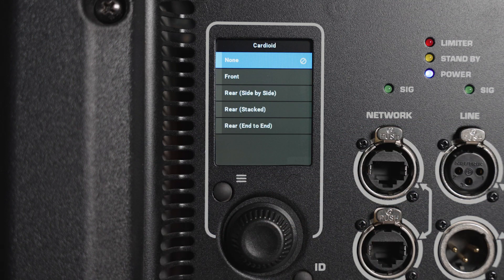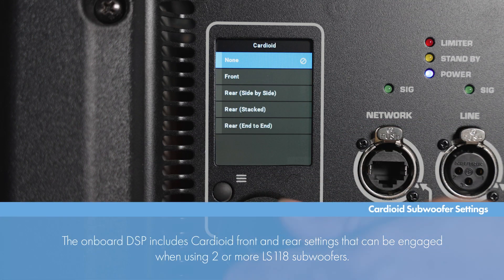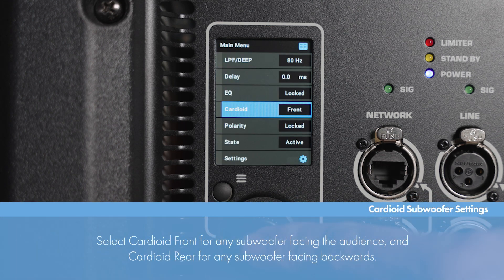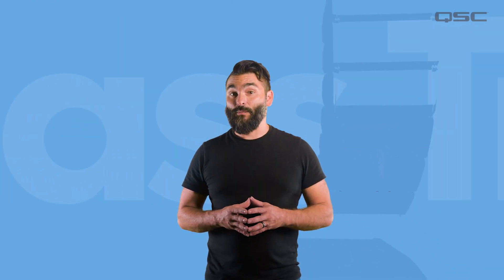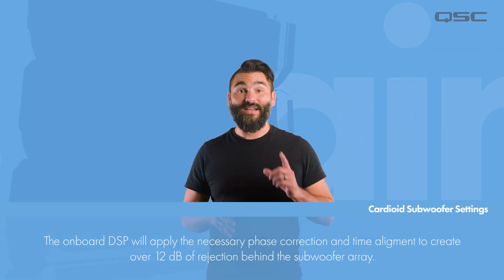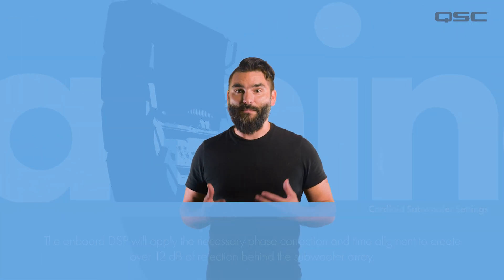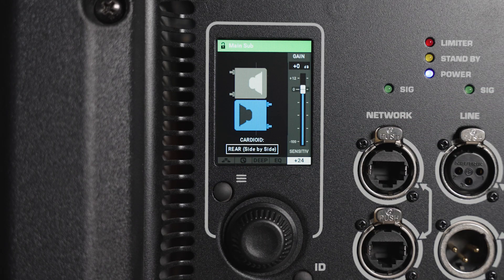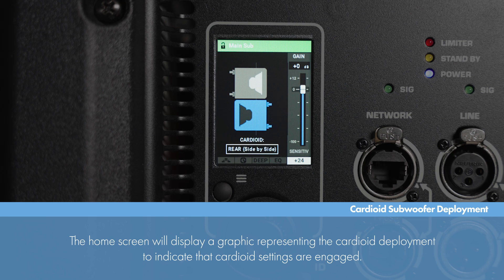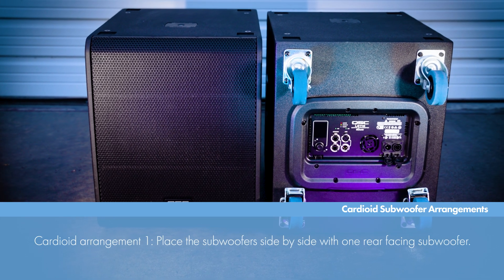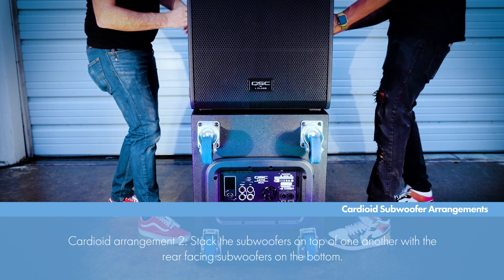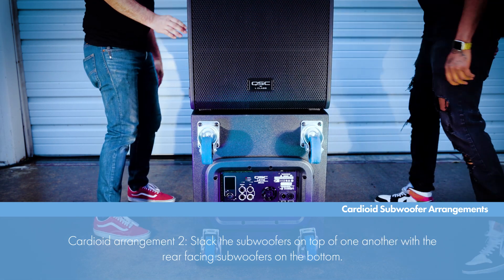If you are deploying a cardioid subwoofer arrangement, you can access and configure those settings in the cardioid section here. Select Cardioid and then select Forward if the subwoofer will be facing the audience, or Rear if the subwoofer is facing away. Set these for each subwoofer in the arrangement and the onboard DSP will automatically apply all of the time alignment and phase correction necessary to create over 12 dB of rejection in the back of the subwoofer arrangement. Note that when you select a cardioid setting, the home screen will show a graphic of the cardioid deployment, letting you know that you are in a cardioid mode. A few examples of a cardioid arrangement would be placing the subwoofers side by side with one forward facing and one rear facing, stacking two subwoofers on top of each other with the rear facing subwoofer on the bottom, or placing the subwoofers end to end. Any of these specific deployment methods can be selected in the cardioid settings and the DSP settings will optimize for that configuration.